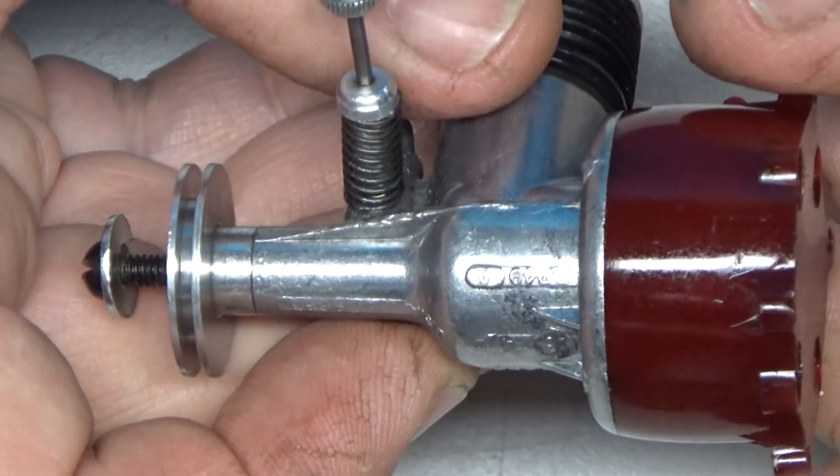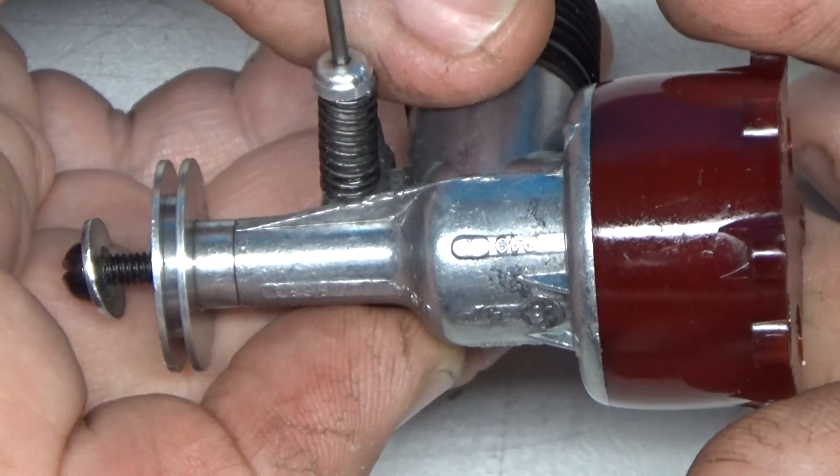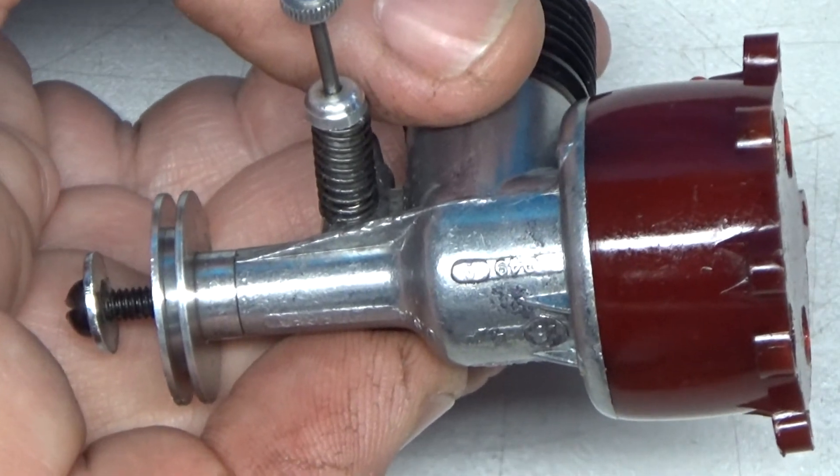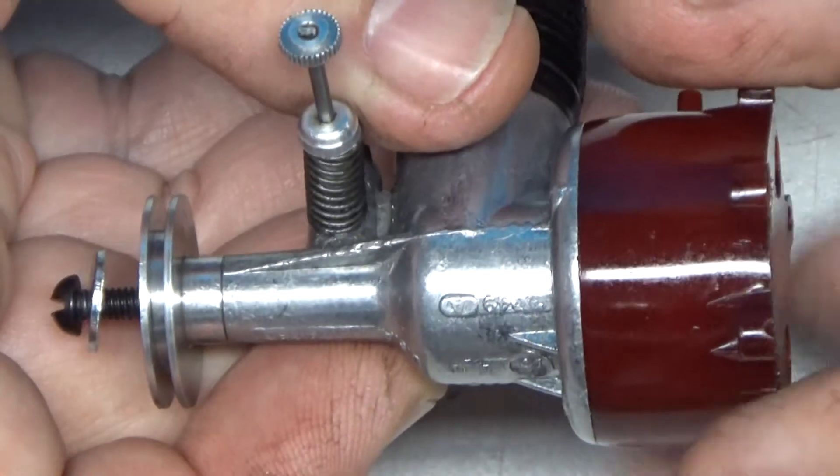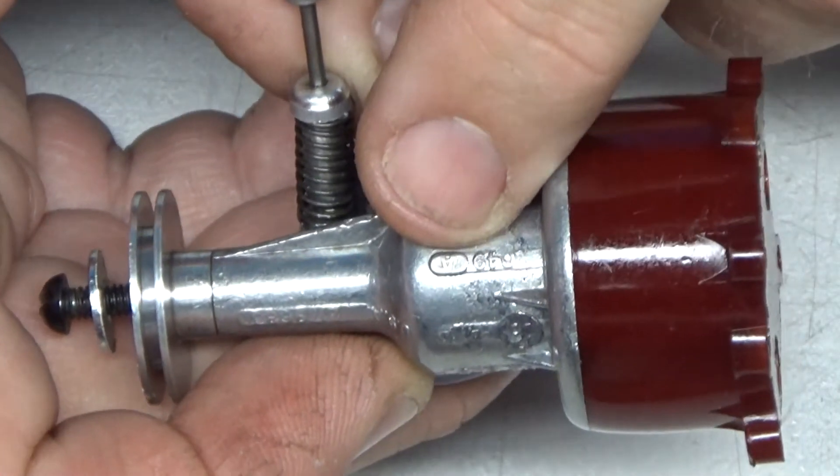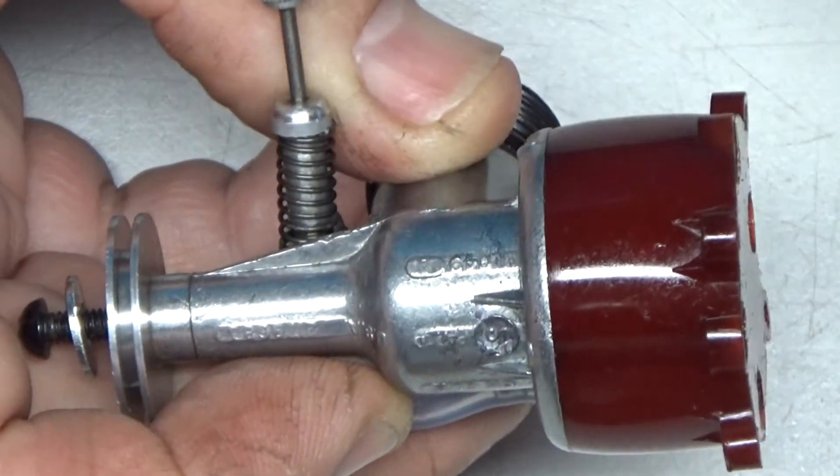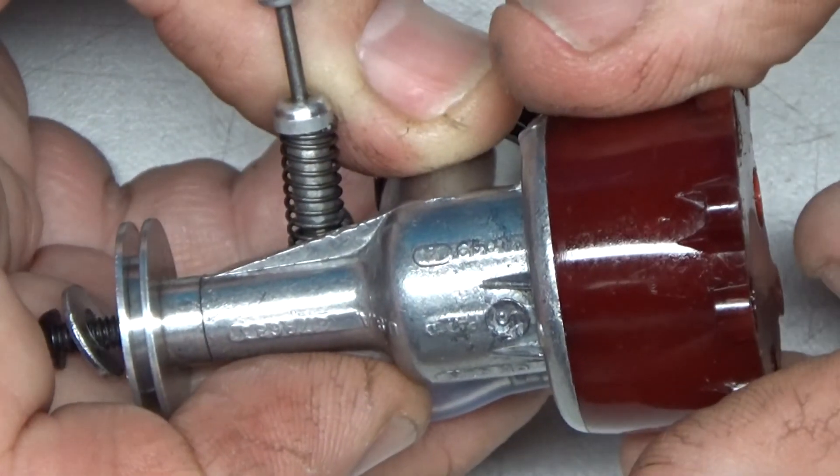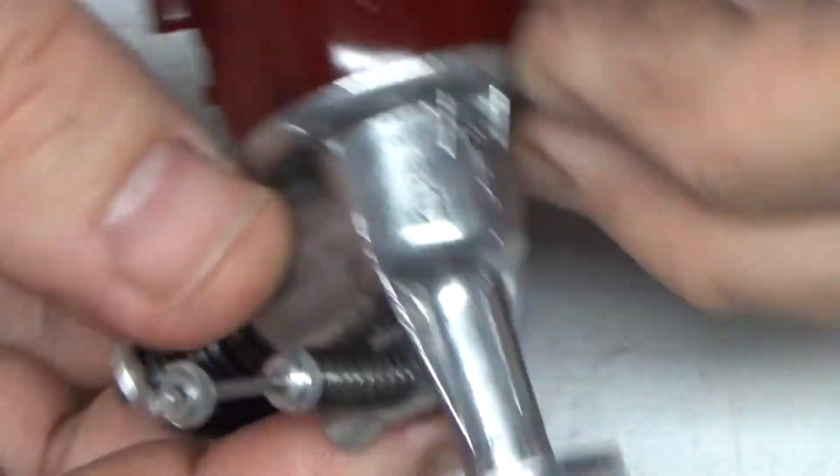I want to show you one thing here. On the very bottom of this casting, I don't know if my camera is going to focus in good enough on it or not, there's some stuff printed. Like, here it says OKCUB, I believe is what that says.